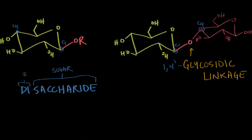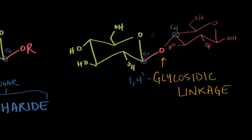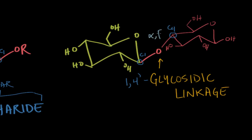Just like we can break down monosaccharides into alpha and beta based on the orientation of the anomeric hydroxyl group, we can more specifically call the 1,4 linkage an alpha or beta linkage based on the orientation of the OR group on the anomeric carbon. If the group is cis with respect to the sixth carbon, it's beta; if it's trans, it's an alpha linkage. In this case, the OR group — which is this whole carbohydrate — is cis with respect to the C6 carbon, so we have a beta 1,4 glycosidic linkage.